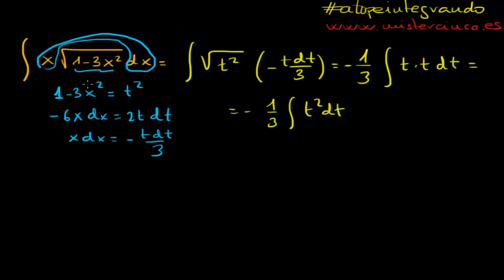Okay, so look, we had this integral, and now, because of this change we have proposed, this is the substitution method, right, we have a much easier integral, which is the integral of t squared dt, and this is a direct integral, isn't it.